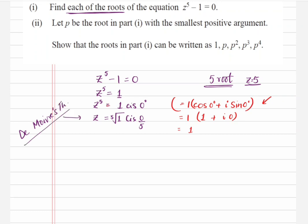Using De Moivre's theorem, z equals 1 cis (0/5). To get multiple roots, we add 2kπ to the angle, where k can be any integer. So when k = 0, z₁ = 1 cis (0/5) = 1 cis 0, which equals 1.